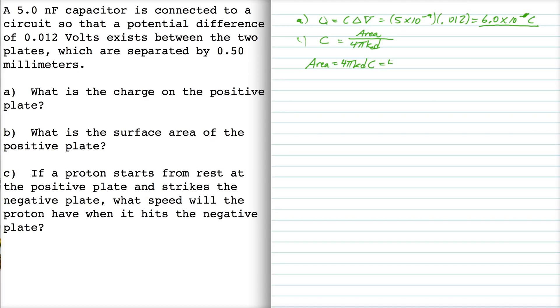So 4 pi times the Coulomb constant times the plate separation, which is 0.5 millimeters, multiplied by the capacitance, which is 5 times 10 to the minus 9. You multiply that out and that gives you 0.28 square meters.